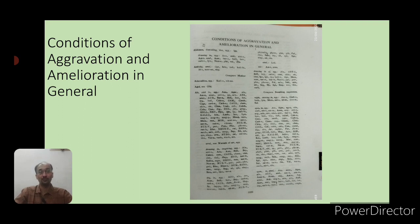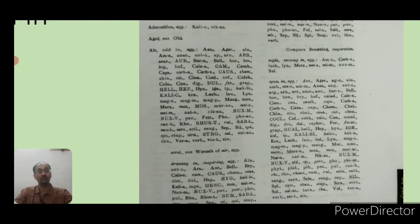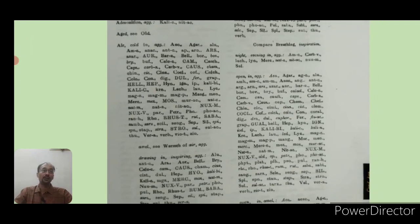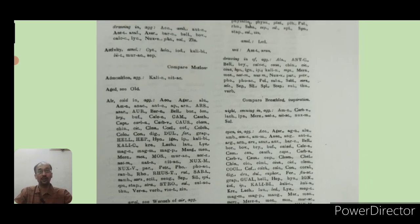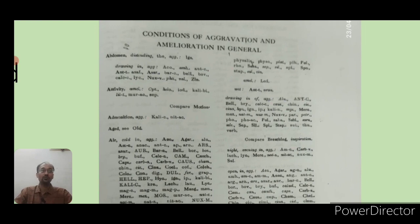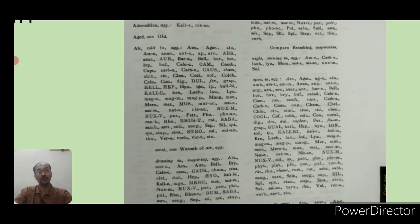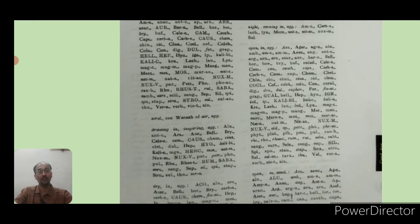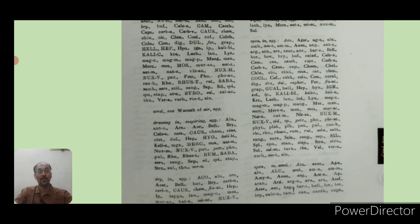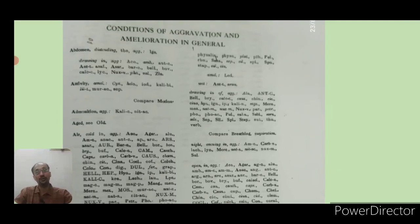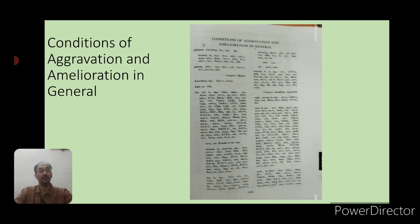In other chapters, aggravation and amelioration are given separately, but in the general aggravation and amelioration chapter, both are found together in one place. For example, the rubric 'air cold' in aggravation is followed by its amelioration. So 'air cold dry in aggravation' and 'air cold dry in amelioration' are both given together in this chapter.